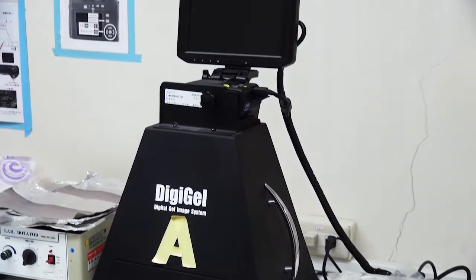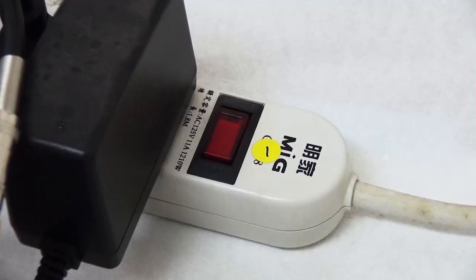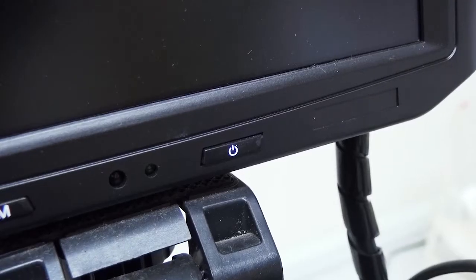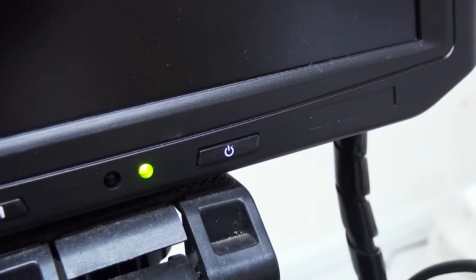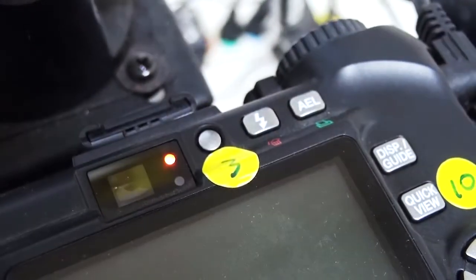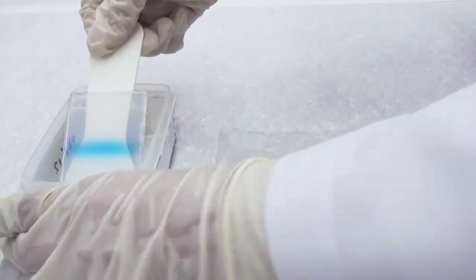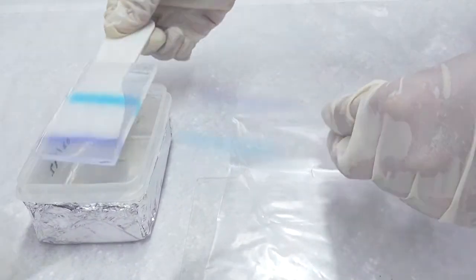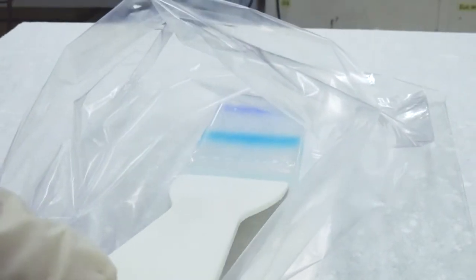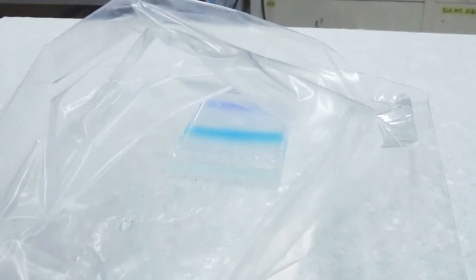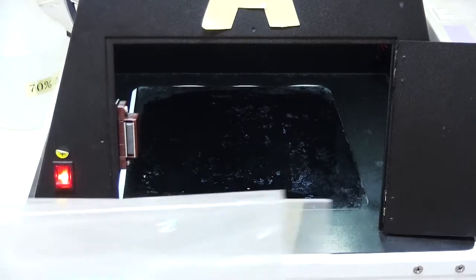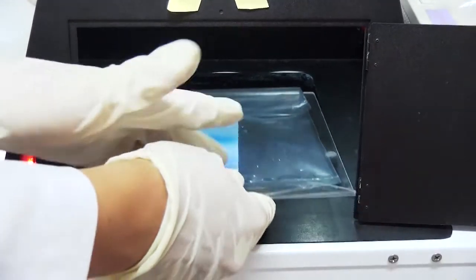Using the UV light imaging system, sequentially turn on the power, screen, camera, and the white light in the black box. Wearing gloves, gently prop up the gel with a spatula. Drain the excess buffer and transfer the gel into the bottom of a Ziploc bag. Center the bag with the gel in the black box.